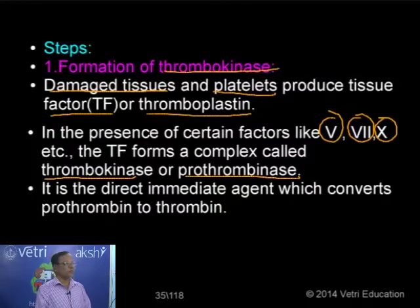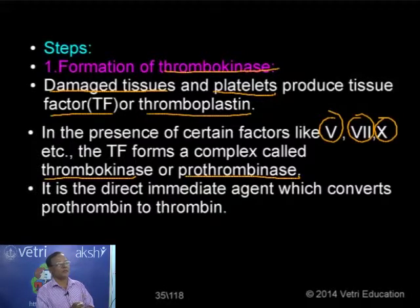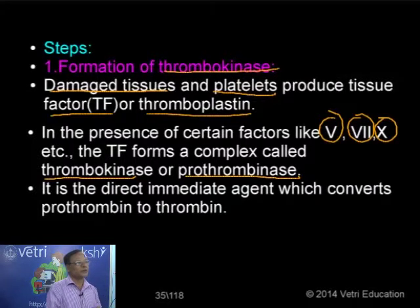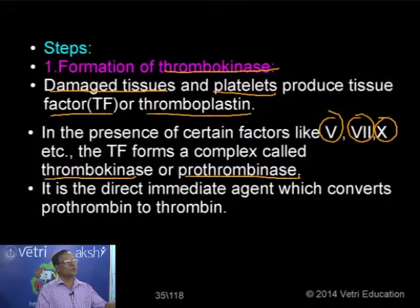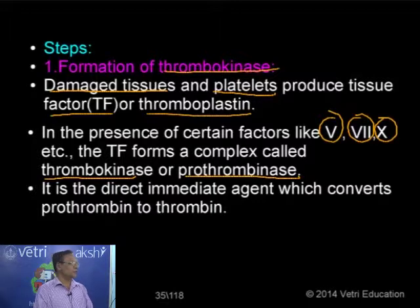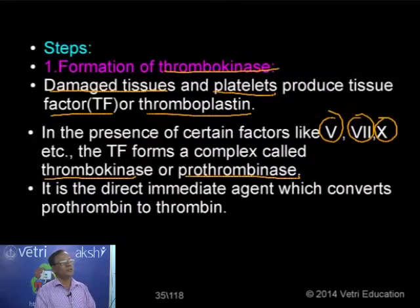Prothrombinase has a direct immediate effect because all reactions are taking place one after another — no reaction is independent. Once the first step is completed, the end product stimulates the second stage of coagulation. Thrombokinase is the immediate agent responsible for converting prothrombin into thrombin in the next stage. Without thrombokinase or prothrombinase, there is no conversion of prothrombin to thrombin.